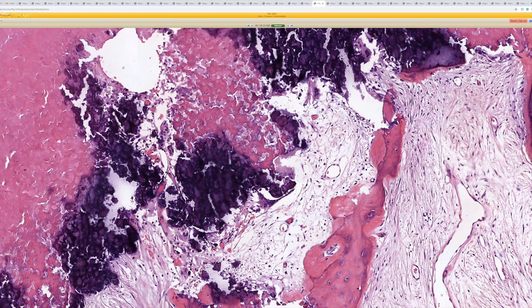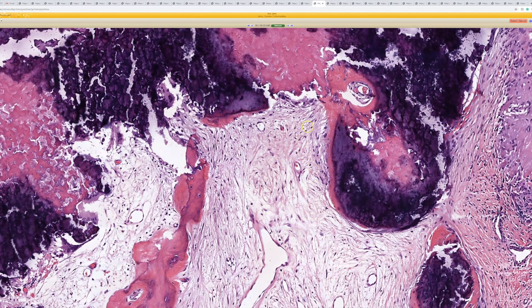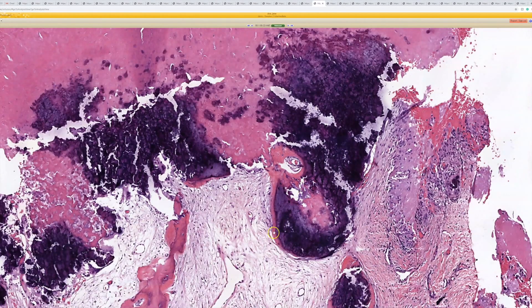That's the way to tell apart, say, osteoma cutis, which is bone, from calcinosis cutis, which is just calcified debris. I feel like a lot of times people struggle with that, and that's the way to tell them apart.